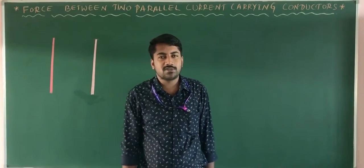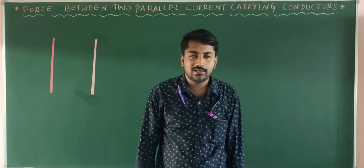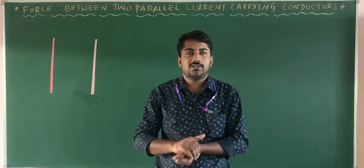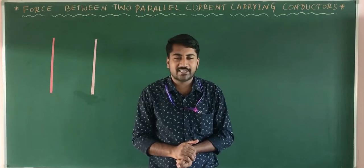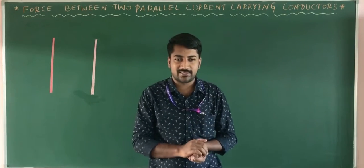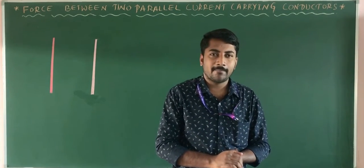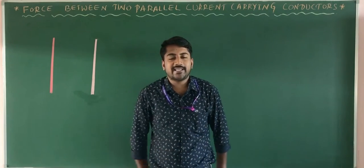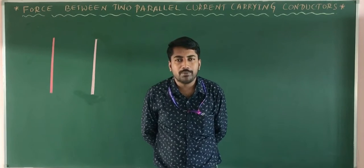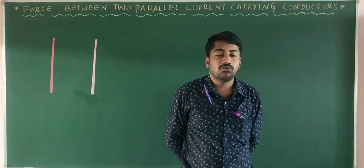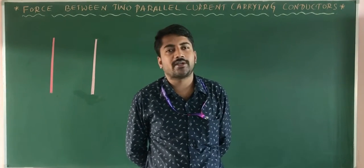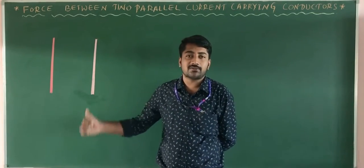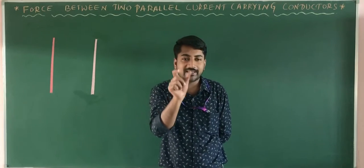We discuss the force between two parallel current-carrying conductors. Up to here we have studied Ampere's circuit law and its applications. The first application is the magnetic field due to a long straight current-carrying conductor, giving the equation B = μ₀I / (2πr). Using that equation, we can calculate the force between two parallel current-carrying wires.